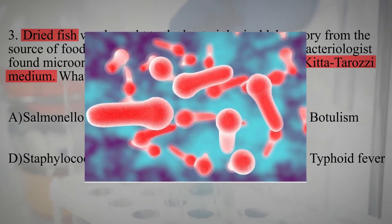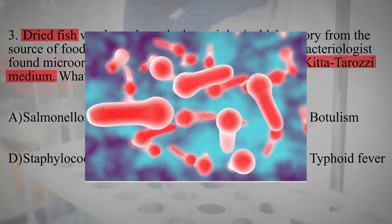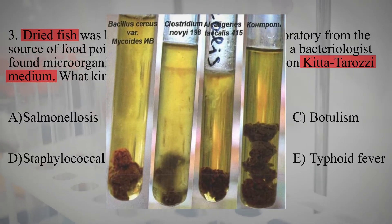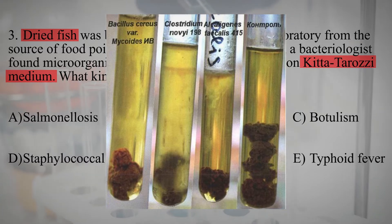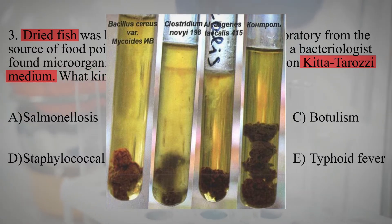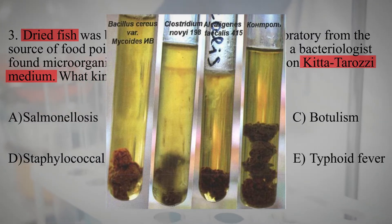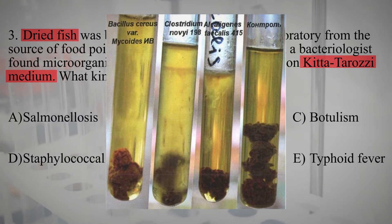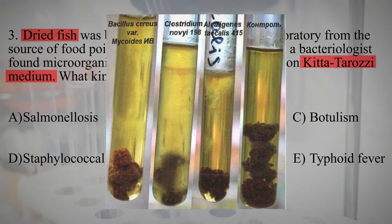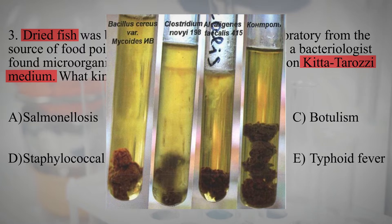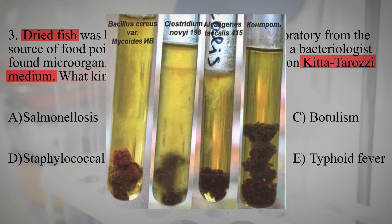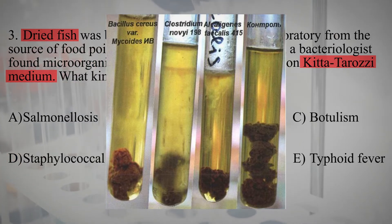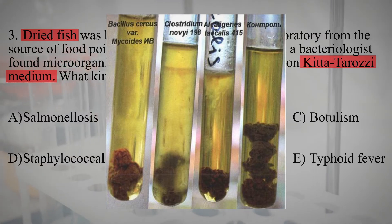In a stained smear, bacteria look like tennis rackets because the spore in clostridia is larger than the cell size. This anaerobic bacterium can be grown on Ketatorozi medium, which consists of mid-peptone broth, 0.5% glucose, and pieces of liver or minced meat to absorb oxygen. Before inoculation, this medium is heated in a boiling water bath for 20-30 minutes to remove oxygen.